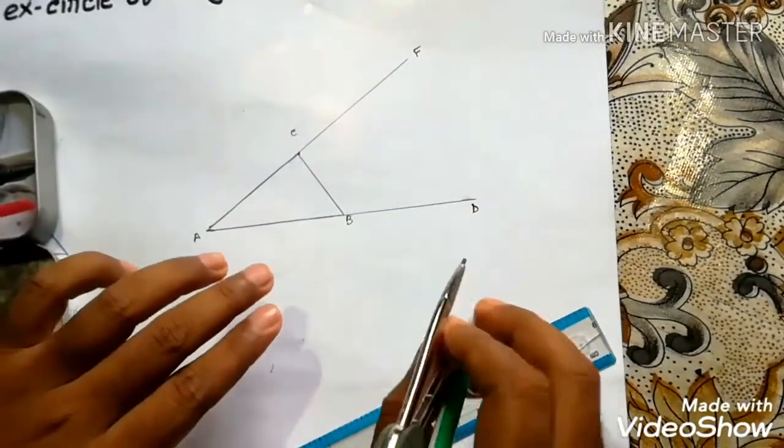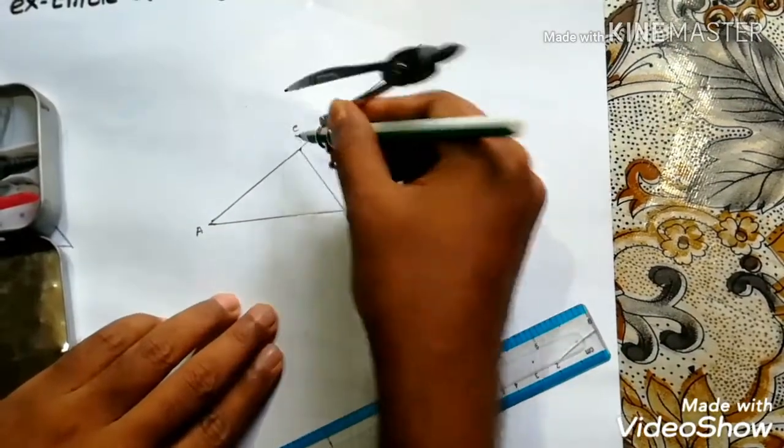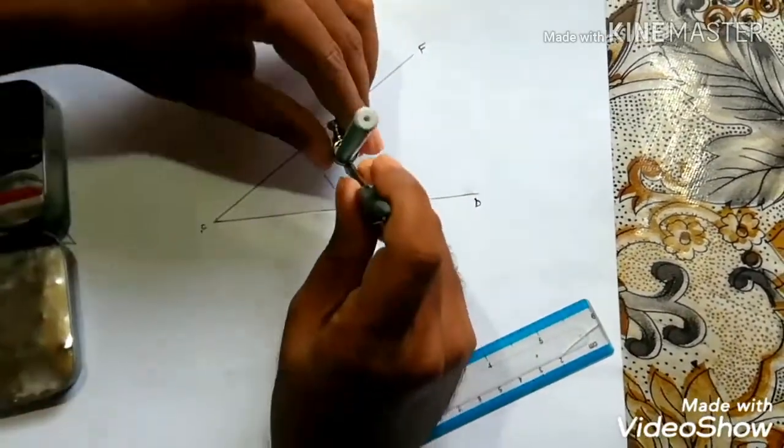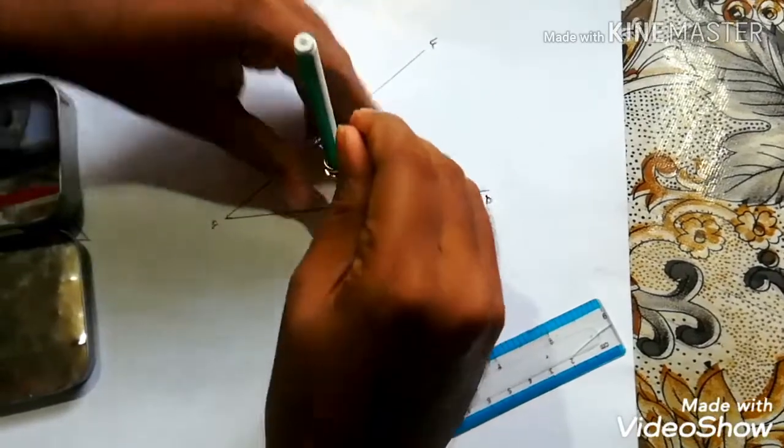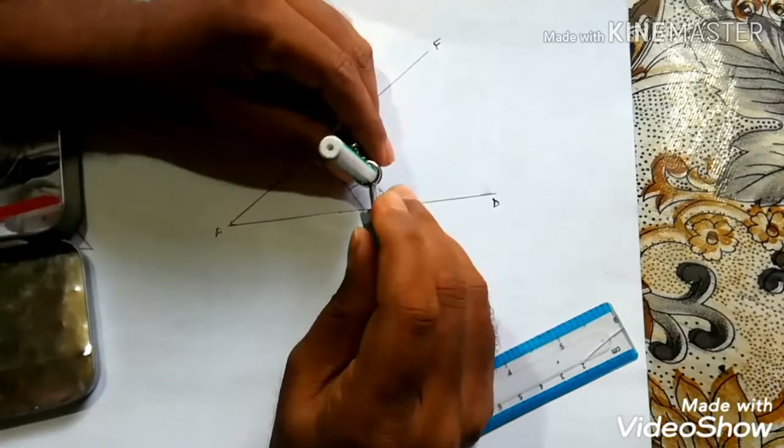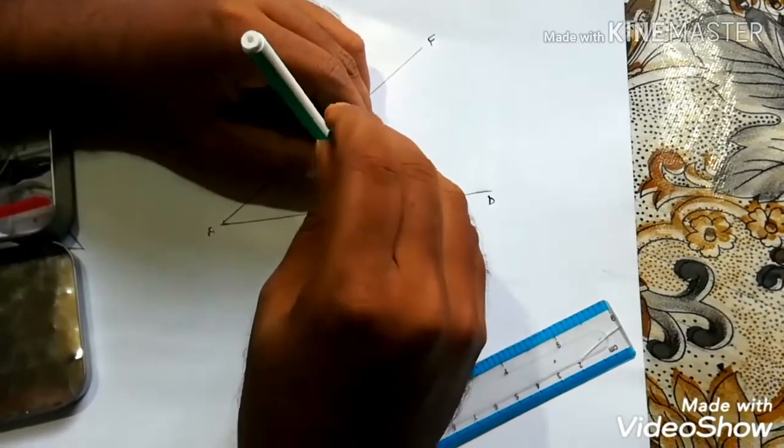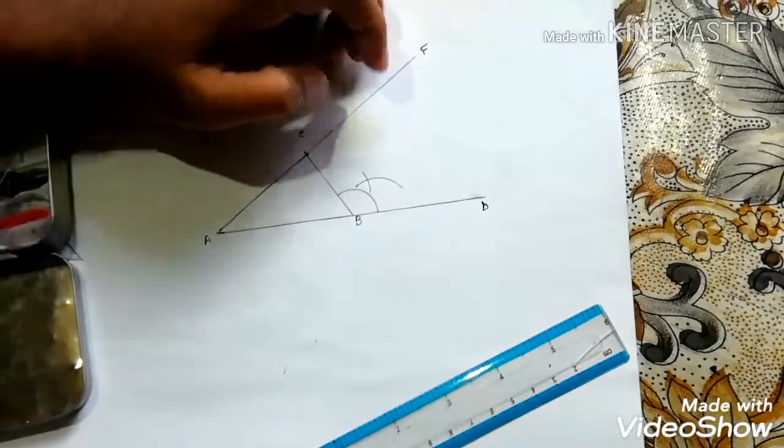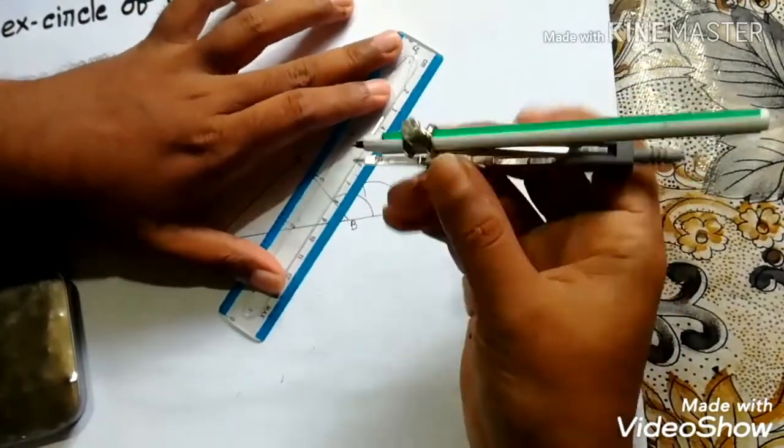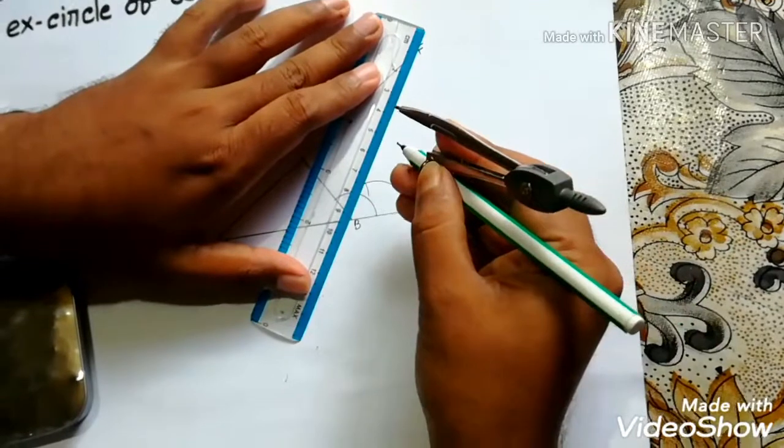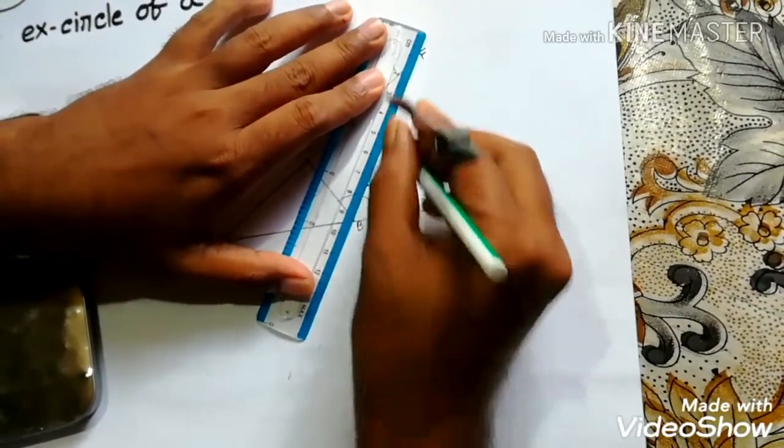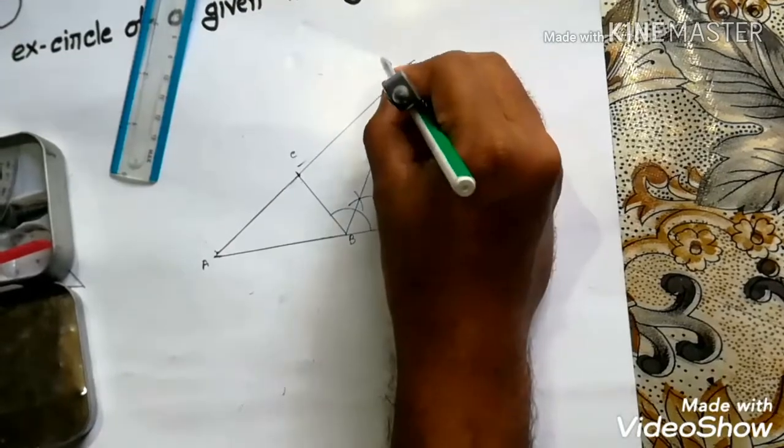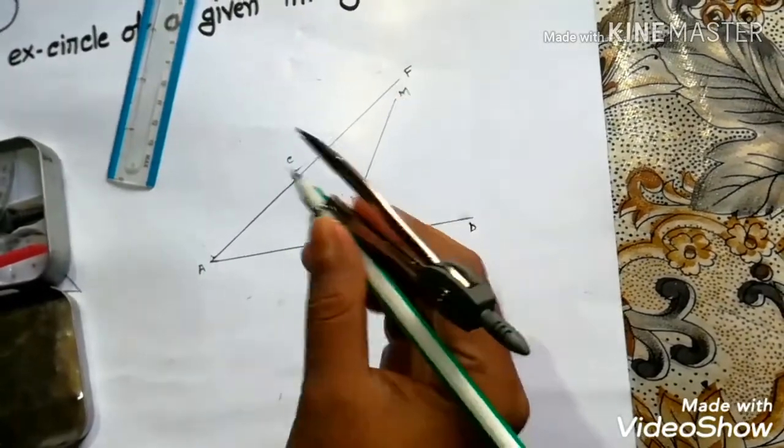Then we bisect CBD angle. So now we bisect CBD. Here we go. And here BM is a bisector of angle CBD.